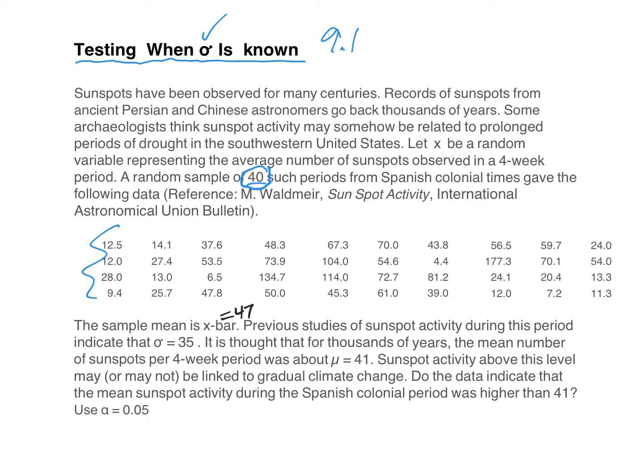If X bar is not given to you, then you're going to have to add all these numbers together and divide by 40. The sample mean is 47. Previous studies of sunspot activity during this period indicate that sigma, that is your population standard deviation, is 35. Remember, it's known. And it is thought that for thousands of years, the mean number of sunspots per four-week period was about 41. Remember, mu is 41. And here's the question. Do the data indicate that the mean sunspot activity during the Spanish Colonial Period was higher than 41?